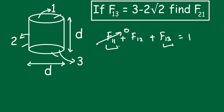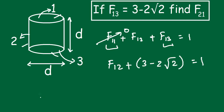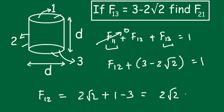Since F11 = 0, we have F12 + F13 = 1. F13 is given as 3 − 2√2, so F12 = 1 − (3 − 2√2) = 2√2 − 2. This is the value of F12.